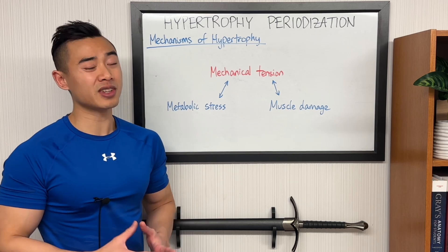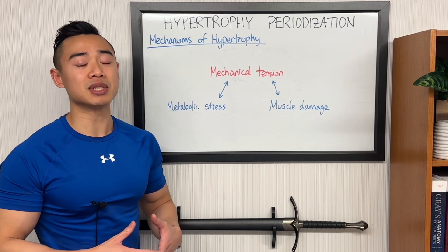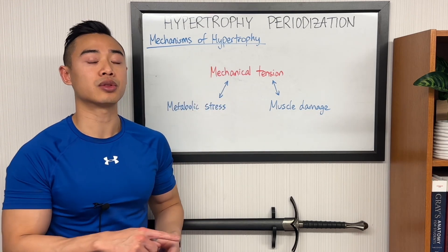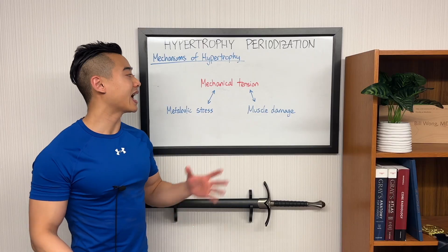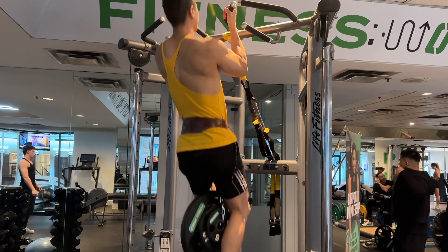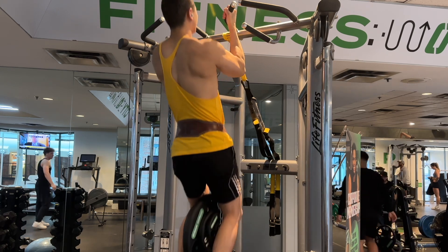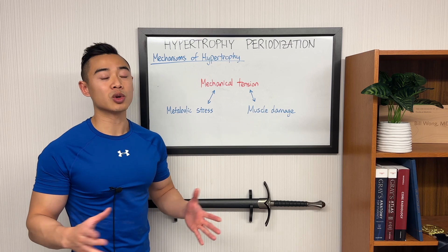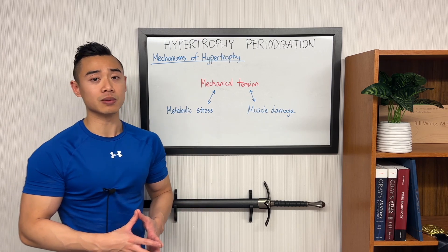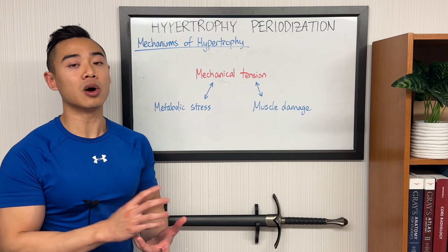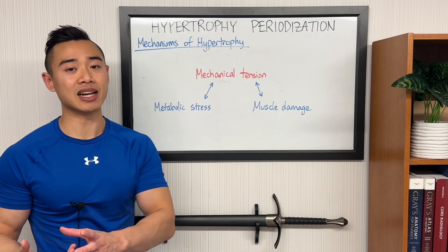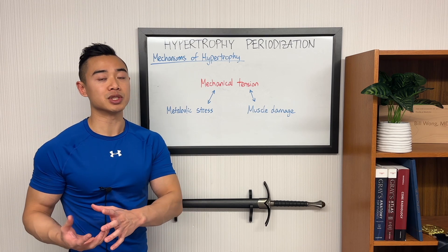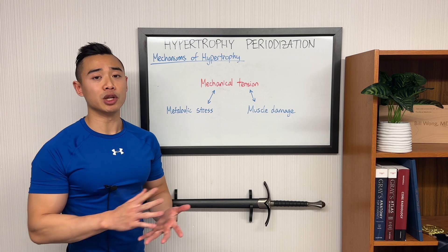The first thing we should talk about when it comes to hypertrophy periodization is mechanisms of hypertrophy. According to our current understanding based on the scientific literature there are three main mechanisms. First of all, mechanical tension. This is the main driver of hypertrophy and you can roughly think about this as the force generated by your muscle fibers during exercise. Basically all rep ranges will create some degree of mechanical tension. You're generating mechanical tension when you perform a 1RM but you're also getting mechanical tension if you're doing a set of say 30 reps. You will get more tension per rep during the 1RM but you also will get more reps doing the higher rep work, so there is some nuance to this.